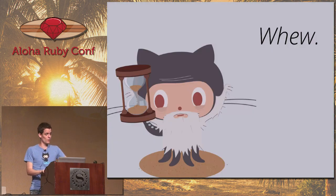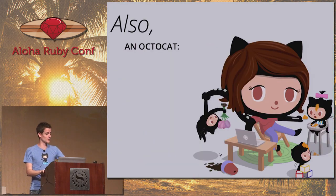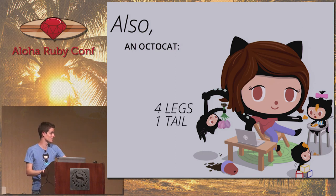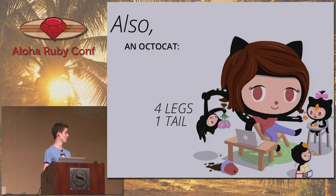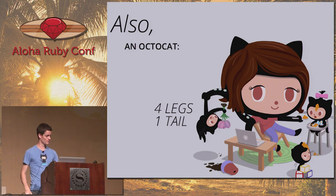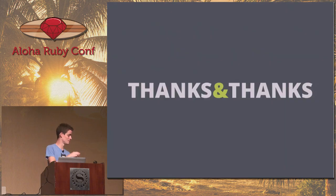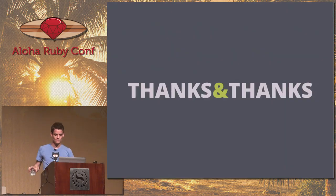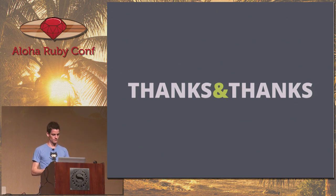One last thing: the Octocat has four legs and one tail — none of this eight-legged thing. That would be absolutely frightening. Humans don't like eight legs. Thanks everyone — question time, or kick me off the stage time.